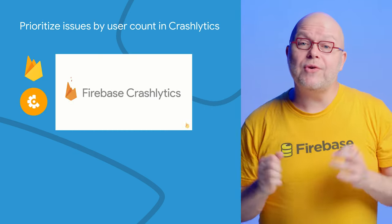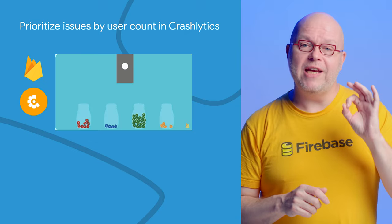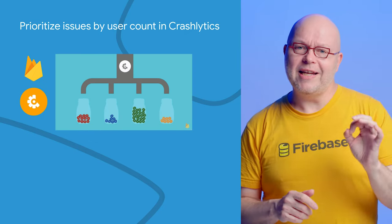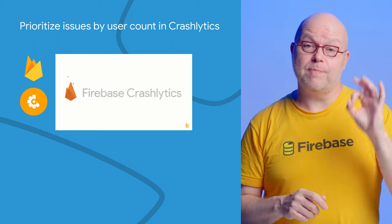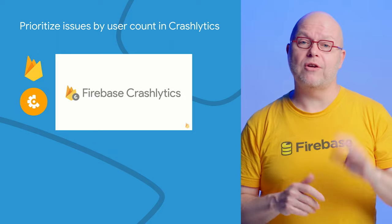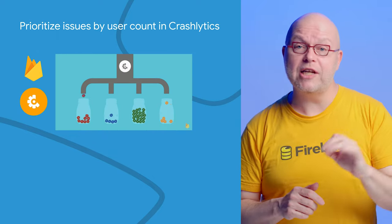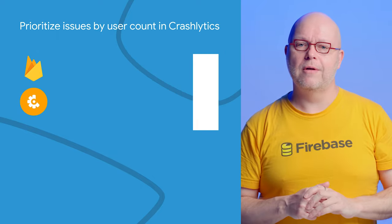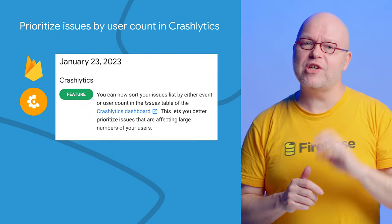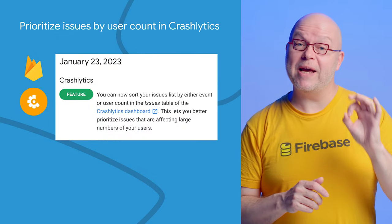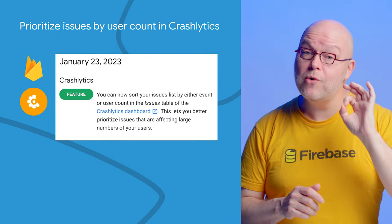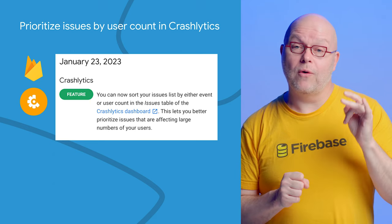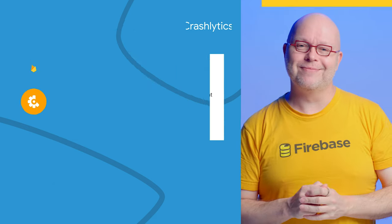By using Crashlytics, you get a prioritized view of the issues that your real users experience. Crashlytics groups the crashes based on their stack trace and other characteristics, and then sorts the resulting issues by the number of times they have occurred. But you can now also have Crashlytics sort the issues based on the number of users that are affected, making it easy to focus on the issues that affect most of your users.